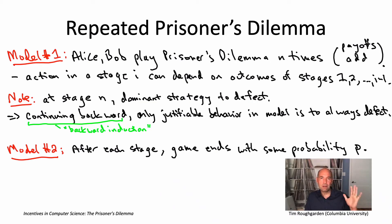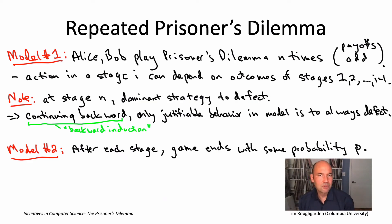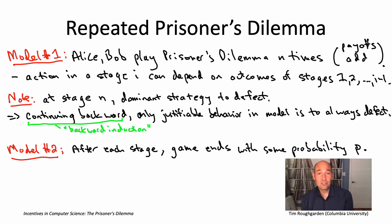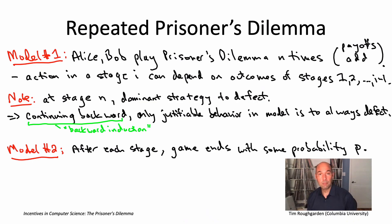As in the first model, payoffs add over the various stages and each player wants to maximize the sum. Since there's now randomness, players really want to maximize their expected payoff — their average payoff over the possible outcomes of these coin flips. This is a very easy-to-swallow tweak to the model: in real-world settings, people don't know exactly which interaction will be the last one. And the good news is that this tweak actually fixes the problem — cooperation can be a sensible strategy in the repeated prisoner's dilemma with a random number of stages.